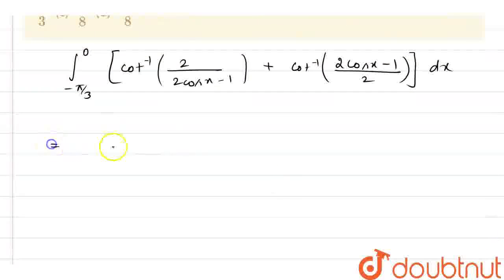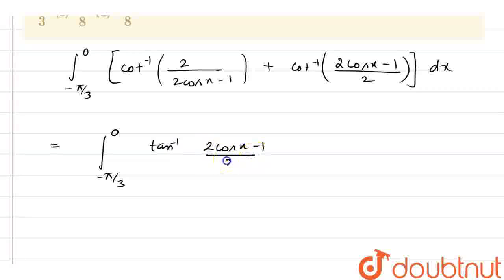Now, in my next step we have minus pi by 3 to 0. Now, I can write it as tan inverse 2 cos x minus 1 by 2 plus cot inverse 2 cos x minus 1 by 2 and dx.